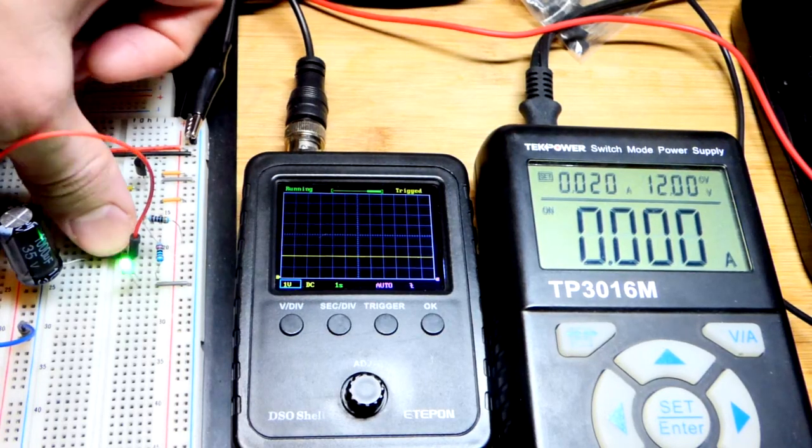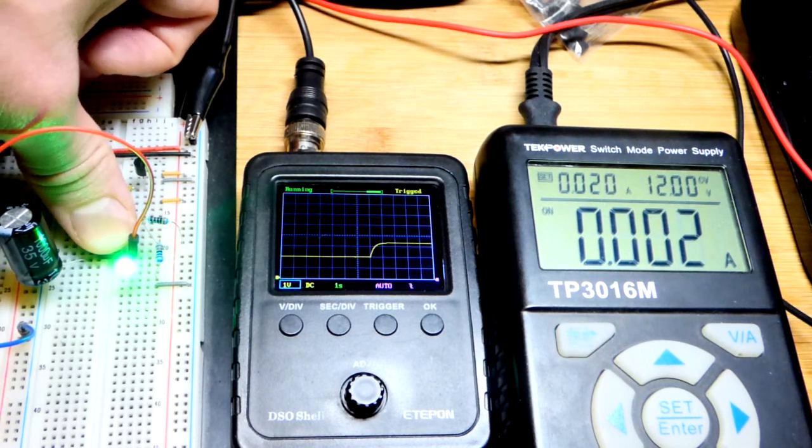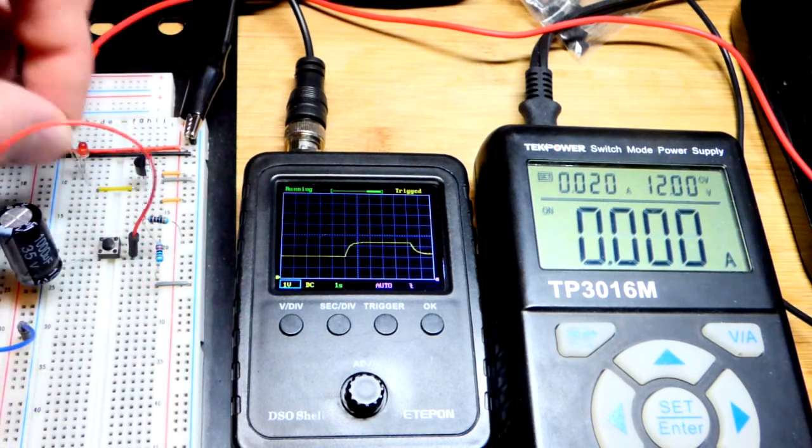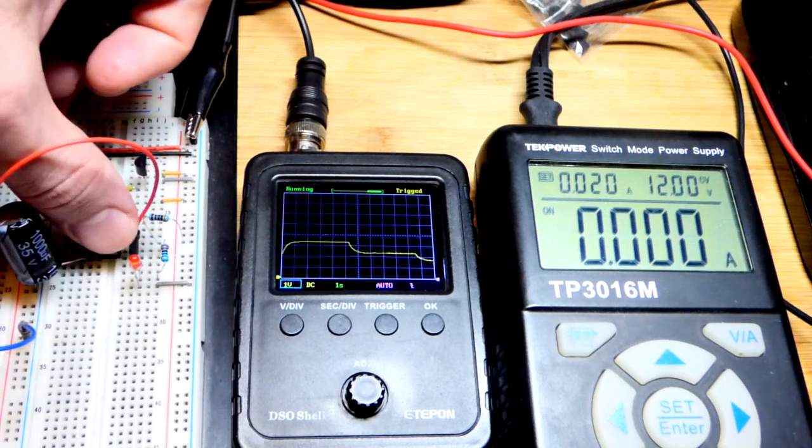And we can also look at current really quick. And now zoom back we can see the power supply, we're only dealing with somewhere around about two milliamps of current approximately.